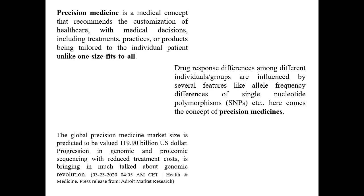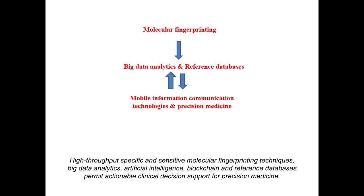Drug response differences among individuals are influenced by features like allele frequency differences of single nucleotide polymorphisms. Here comes the concept of precision medicine. As per experts, the global precision medicine market size is predicted to be $119.90 billion. Progression in genomic and proteomic sequencing with reduced treatment cost is the main reason for uptake of precision medicine. The process involves molecular fingerprinting, then using algorithms of AI, big data analytics, reference material databases, and mobile information communication technologies.